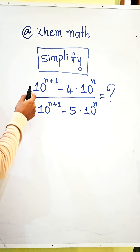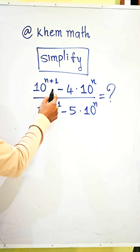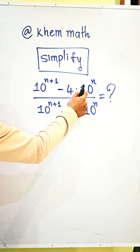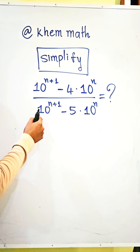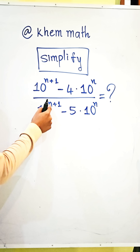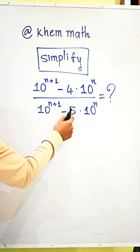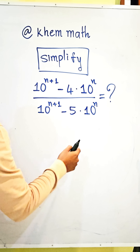Simplify 10 power n plus 1 minus 4 times 10 power n, divided by 10 power n plus 1 minus 5 times 10 power n.